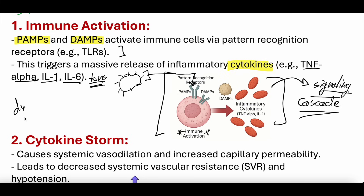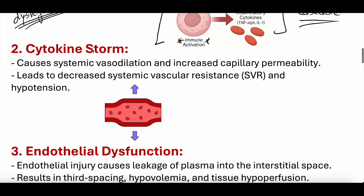When it comes to septic shock, that dysregulated response involves a more robust cytokine release, which causes a more robust immune reaction to infection and can cause things like cytokine storm — somewhat of an informal term. Cytokine release causes systemic vasodilation and increased capillary permeability, leading to decreased systemic vascular resistance, which can lead to hypotension.